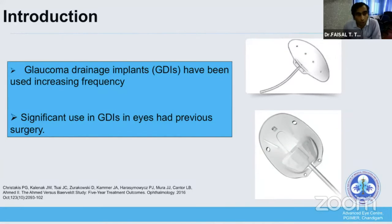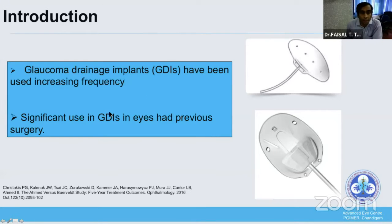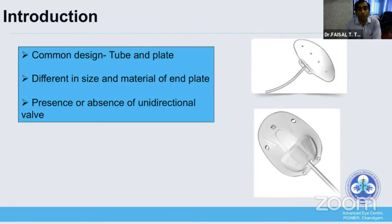As discussed by the previous speaker, glaucoma drainage implants have been increasingly used for various types of glaucoma, with a significant shift in practice towards implants in eyes with a previous history of ocular surgery like failed trabeculectomy or other intraocular surgeries. Both non-valve and valve devices share similarities in tube design and plate, but differ in end plate size, material, and presence or absence of a unidirectional valve system.